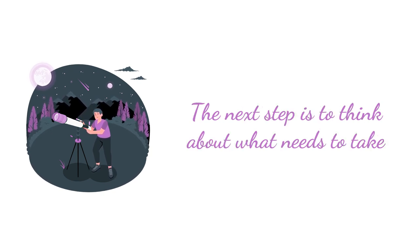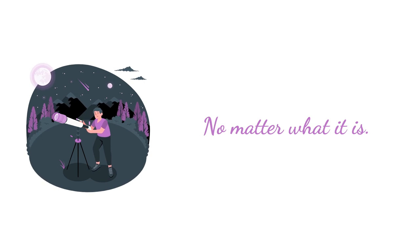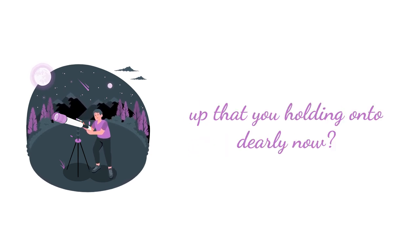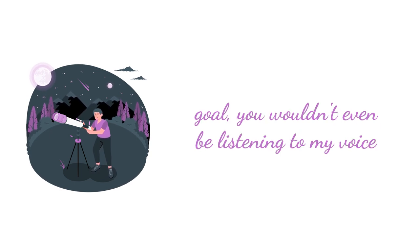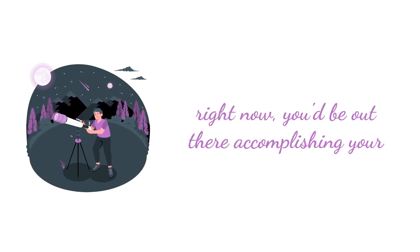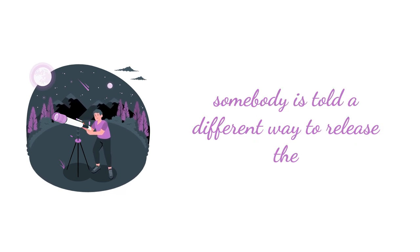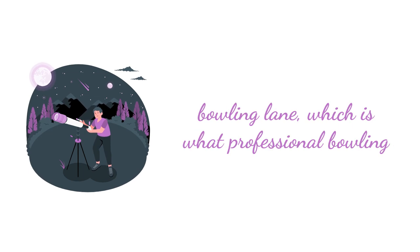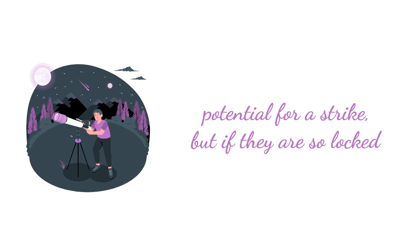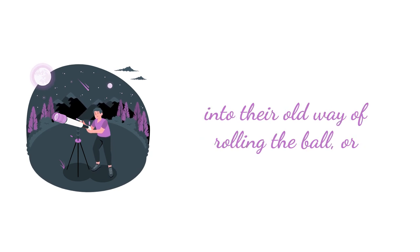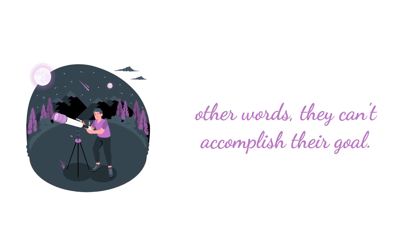The next step is to think about what needs to take place, or what needs to change in your life so that you can have this goal you set for yourself today. In other words, what are you going to have to give up that you are holding on to dearly now? Because if you weren't holding on to something that's stopping you from accomplishing this goal, you wouldn't even be listening to my voice right now — you'd be out there accomplishing your goal. For instance, let's use an example of bowling. If somebody is told a different way to release the ball, or perhaps a different mark out in the bowling lane, they would roll that ball over that arrow and it would look into the pocket and give them a potential for a strike. But if they are so locked into their old way of rolling the ball, they can't get out of their own way — in other words, they can't accomplish their goal.